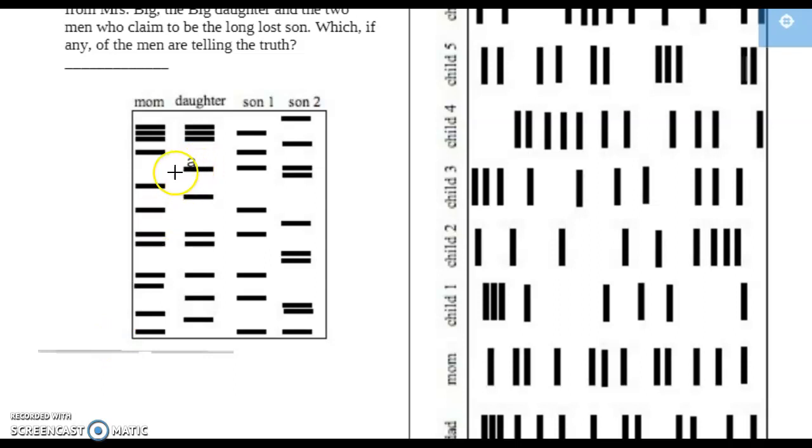So this band is on Daughter but not in Mom, so this band would have come from the father. Both of those have that one. This band did not come from Mom, but it would have come from Mr. Big. But neither one of them claiming to be the son has that band. And also, neither one of them have this band from Mom.